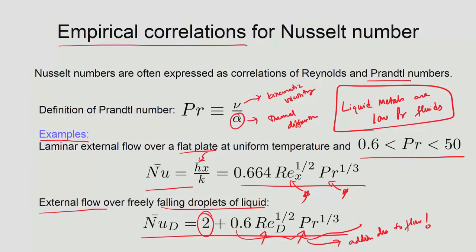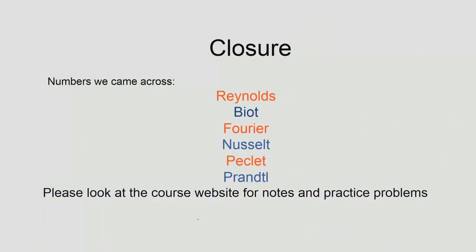Across these sessions on fluid flow and heat transfer, several dimensionless numbers have been introduced: Reynolds number (scaling of Navier-Stokes), Biot number (lumped capacitance validity), Fourier number, Nusselt number (heat transfer with fluid flow), Peclet number (flow along heat transfer direction), and Prandtl number (ratio of momentum to thermal diffusivity). There are many more numbers important in this subject, which will be encountered in tutorial problems.